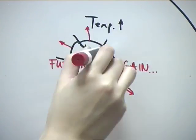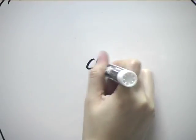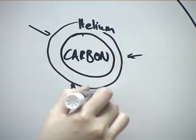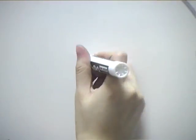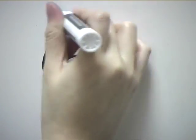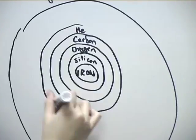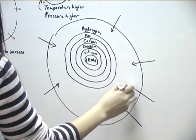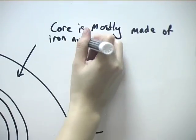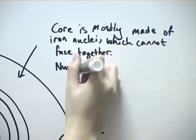Every time the star runs out of fuel, the core contracts, raising the temperature and pressure sufficiently for heavier and heavier nuclei to fuse. This happens until the core is mostly made of iron nuclei, which cannot fuse together. Nuclear fusion therefore finally stops.